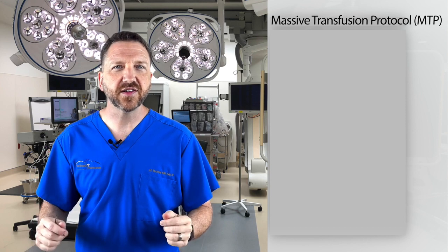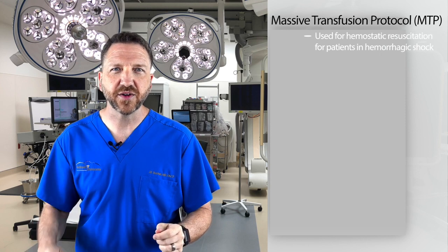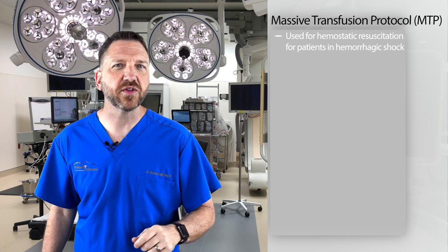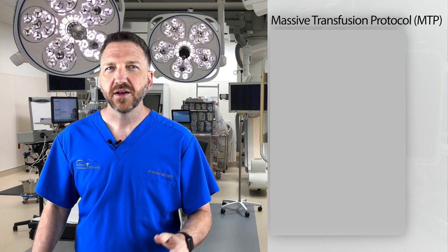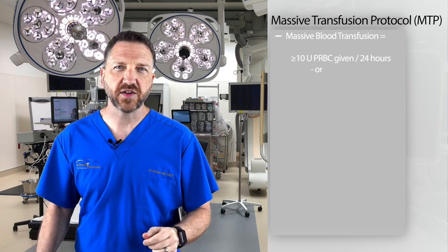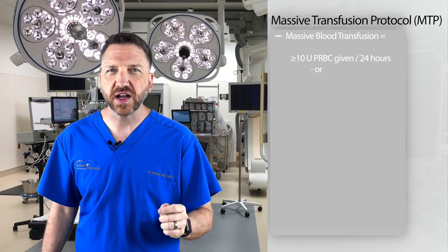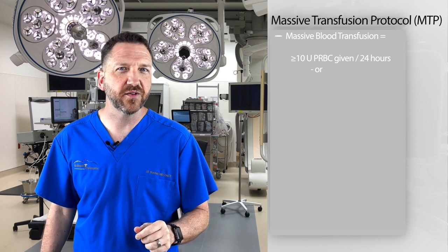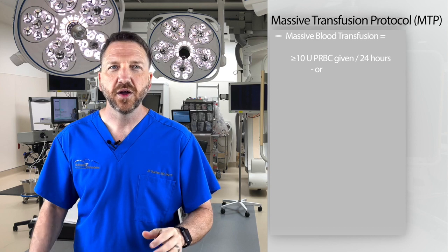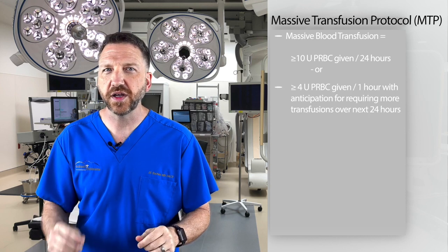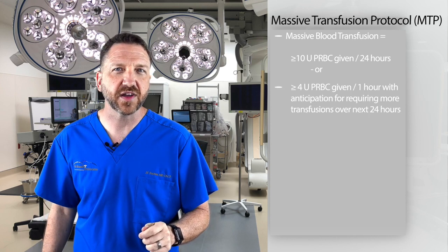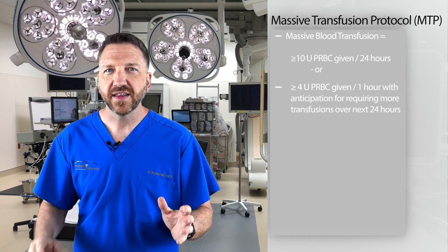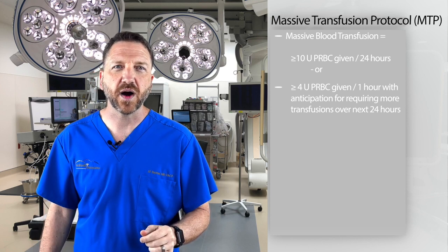It encompasses the concept of hemostatic resuscitation for those patients in hemorrhagic shock with acute traumatic coagulopathy. Massive blood transfusion is defined as a need to transfuse at least 10 units of packed red blood cells over a 24-hour period, or the need to transfuse more than 4 units of packed red cells in the first hour with the anticipation that ongoing transfusions will still be required.